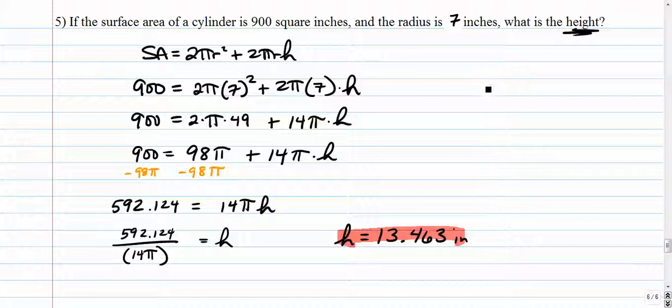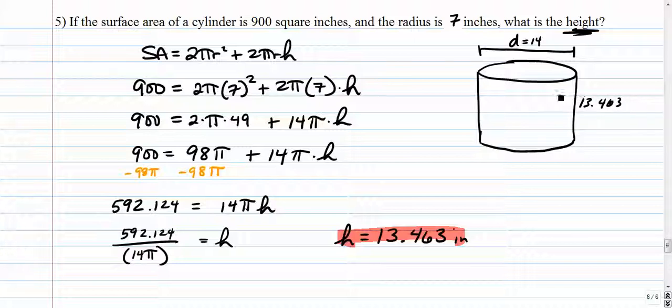So that is our height. And what I like to do is draw a picture once I get everything all set. If the radius is 7 and the height is about 13.5, that tells me that my cylinder is going to be about as tall as it is wide. Because it's 14 inches wide. The diameter is 14 and the height is about the same. So I'm looking at a cylinder that is about as wide as it is tall.